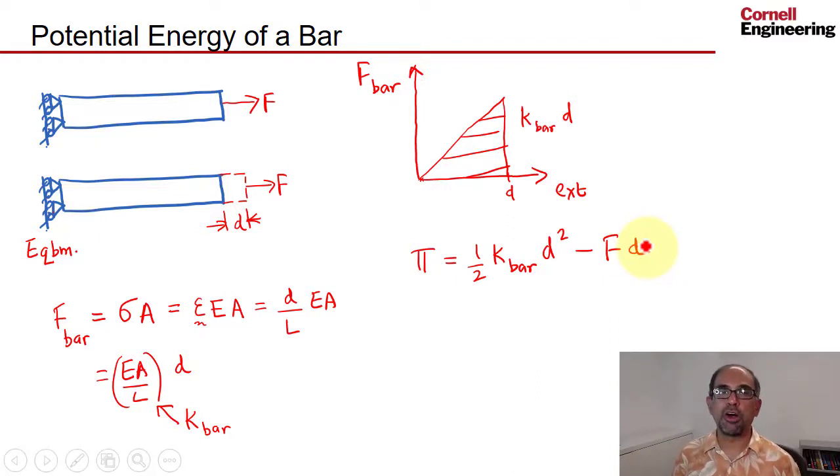And you also keep in mind that if the force was in the opposite direction—if we were compressing the bar—we would still, this would still be positive. If you compress it by an amount D, you will still get this because the force in the bar opposes the direction of deformation.